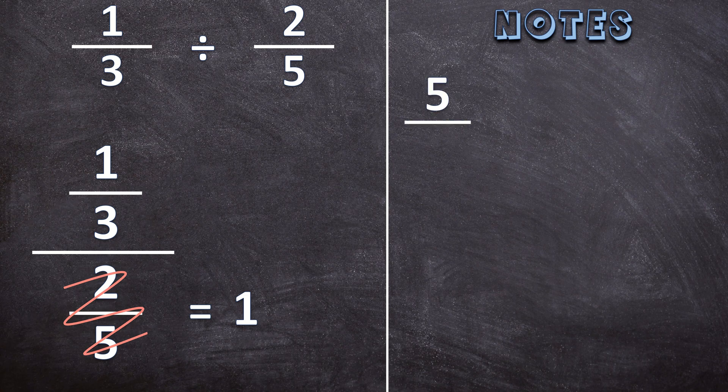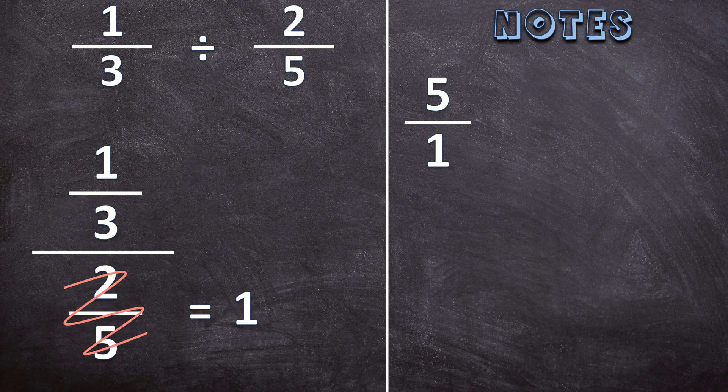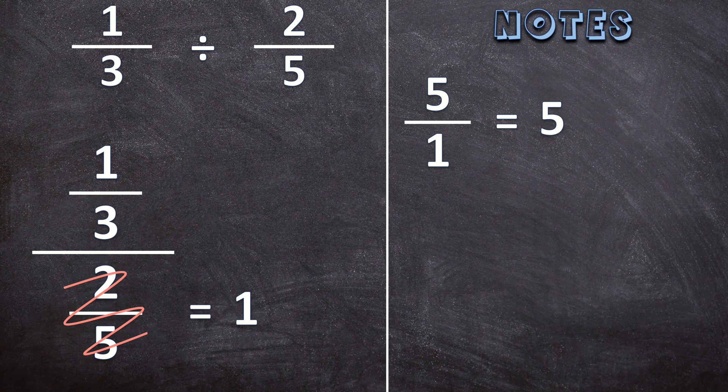Let's have a look at the notes. When I have 5 over 1, the answer is going to be 5. So anything over 1 is itself. If I have 5 apples, I give it to one person, that person is going to have 5 apples. So 5 divided by 1 is 5. So anything divided by 1 is itself.